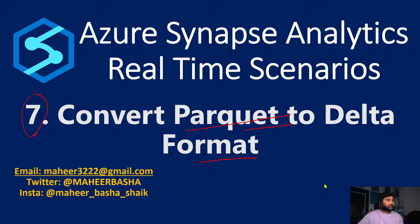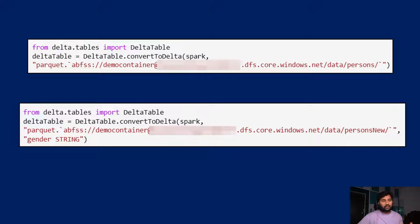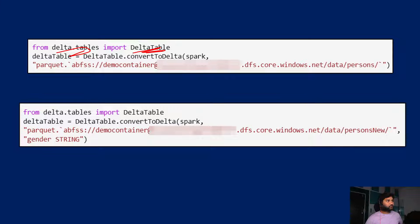The agenda is to know about converting Parquet format to the Delta format. To do that there is a library called delta.tables from which you have to take the DeltaTable module, import it into the notebook, and then use the DeltaTable.convertToDelta function to do that job.